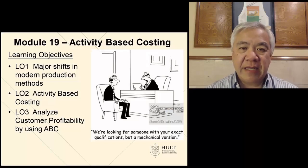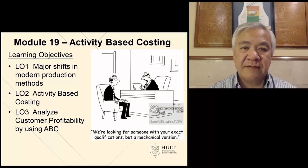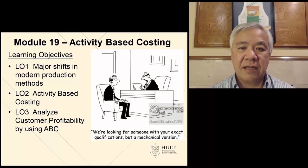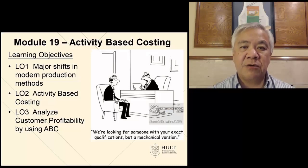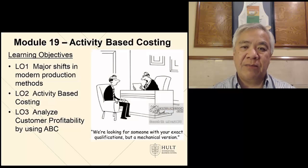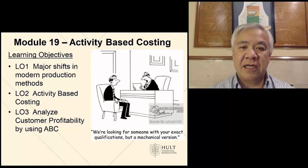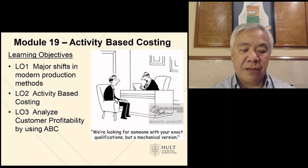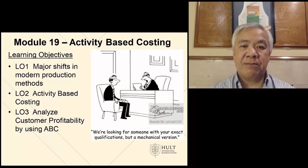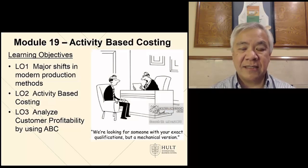This is Module 19, Activity-Based Costing. We have three learning objectives from this chapter. One is to look at the reason why ABC has become so important. That reason is the shift away from labor toward automation. Second is looking at an example of how to do activity-based costing. Three is how we can apply ABC to customer profitability analysis.